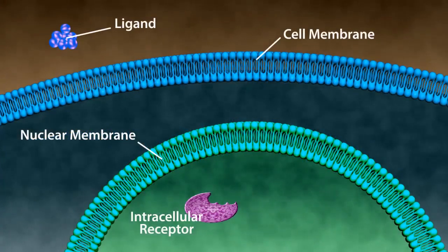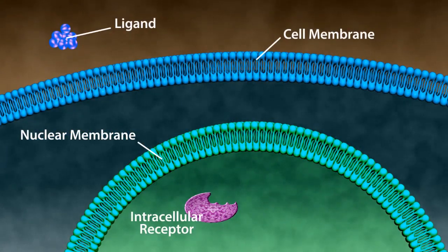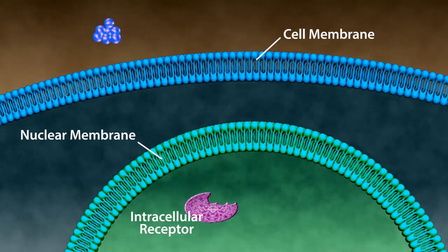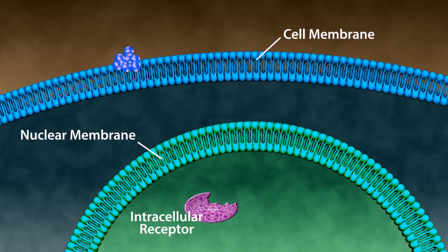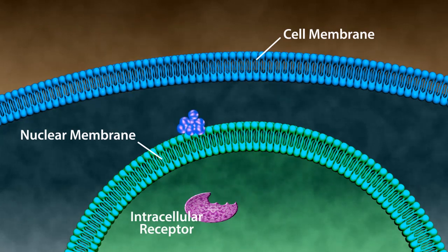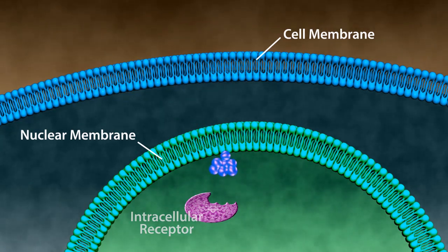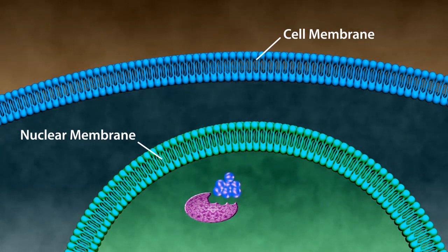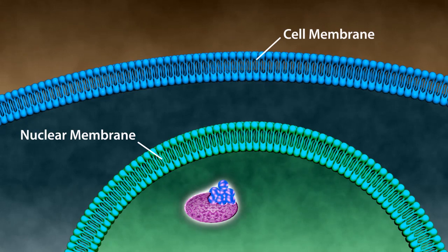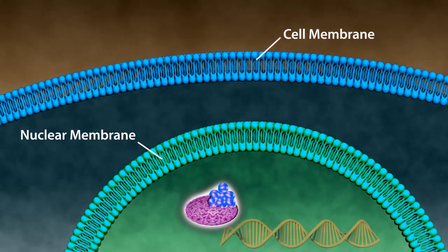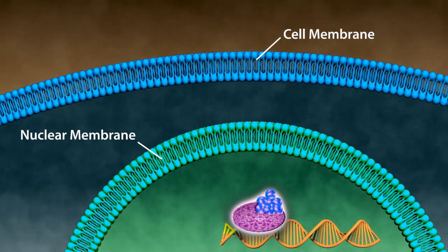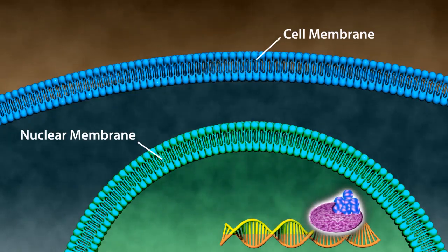Intracellular receptor: ligands that pass through the cell membrane enter the cell and into the nucleus, crossing the nuclear membrane. After entering the nucleus, the ligand binds to the intracellular receptor. This can alter the transcription of DNA within a cell.